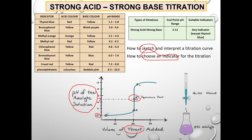At any point after the equivalence point, we will have an excess of sodium hydroxide, as all the hydrochloric acid has been neutralized, and the pH will be basic. You will notice a steep part in the titration curve. The steep part is called the endpoint pH range. For a titration between a strong acid and a strong base, the endpoint pH range is 3 to 11, and within this range lies the equivalence point at pH 7.